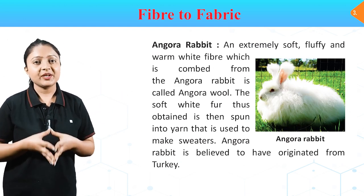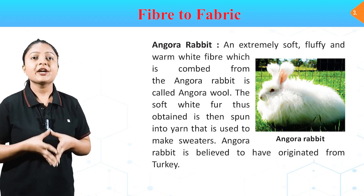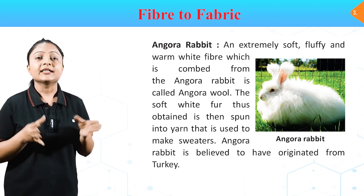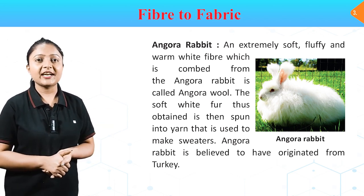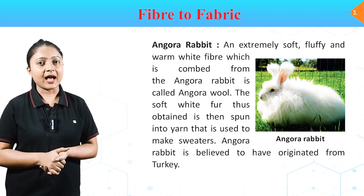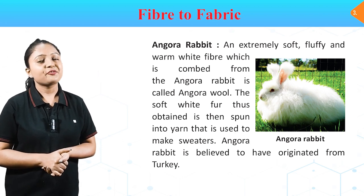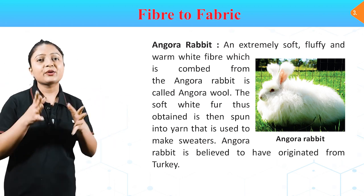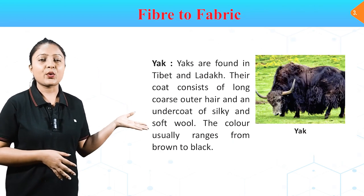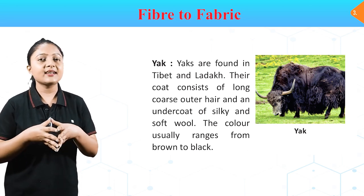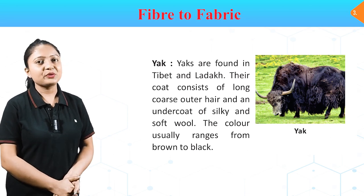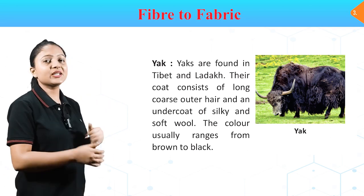Angora Rabbit: an extremely soft, fluffy and warm white fiber which is combed from the Angora rabbit is called angora wool. The soft white fur thus obtained is spun into yarn used to make sweaters. Angora rabbit is believed to have originated from Turkey. In this image you can see an Angora rabbit. Yak: yaks are found in Tibet and Ladakh. Their coat consists of long coarse outer hair and an undercoat of silky soft wool. The color usually ranges from brown to black.